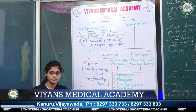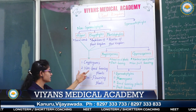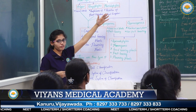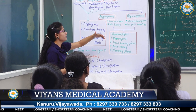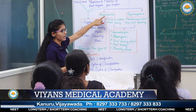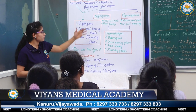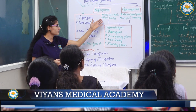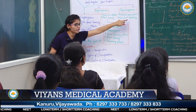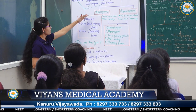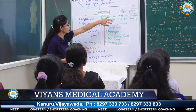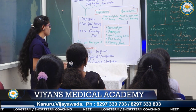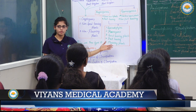Cryptogams means non-seed bearing plants and non-flowering plants. Now let us know about spermatophyte. Spermatophyte is again divided into two divisions: angiosperms and gymnosperms. Angiosperms are called as closed seed plants and gymnosperms are called as naked seed plants. Angiosperms are fruit-bearing plants and gymnosperms are non-fruit bearing plants. Angiosperms and gymnosperms both are called as phanerogams, which means seed-bearing plants, flowering plants, and fruit-bearing plants.